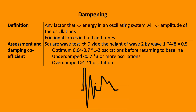An underdamped system oscillates more — three or more oscillations before returning to baseline. An overdamped system produces just one oscillation. This can be quantified by measuring and comparing the height of the first and second oscillations. Optimum is 0.64; underdamped is less than 0.7; overdamped is greater than 1.